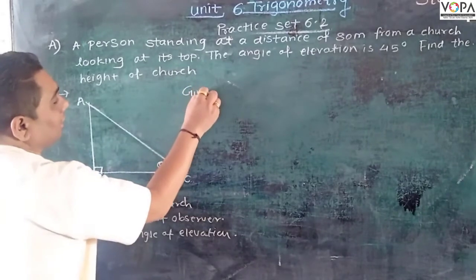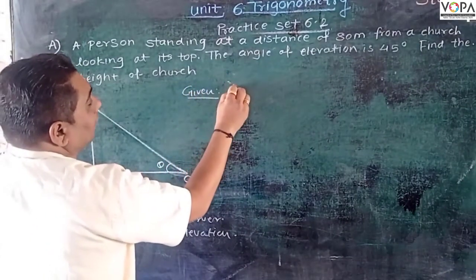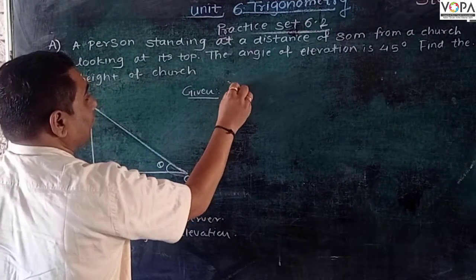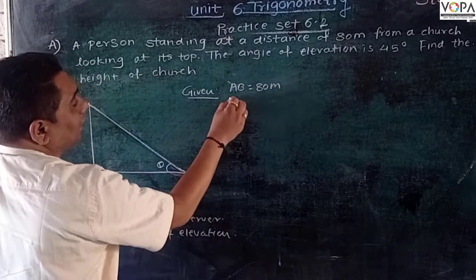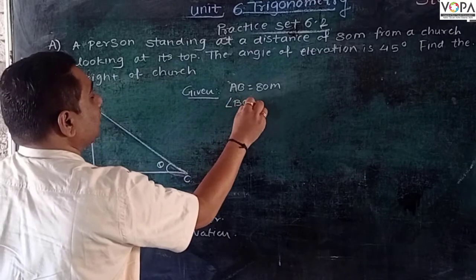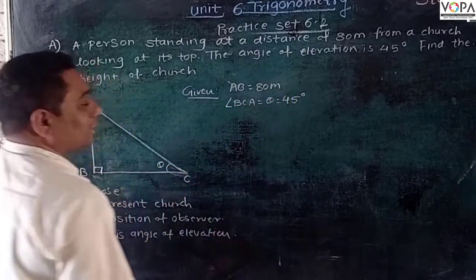So given: BC equals 80 meters, and angle of elevation, angle BCA which equals theta, is 45 degrees.